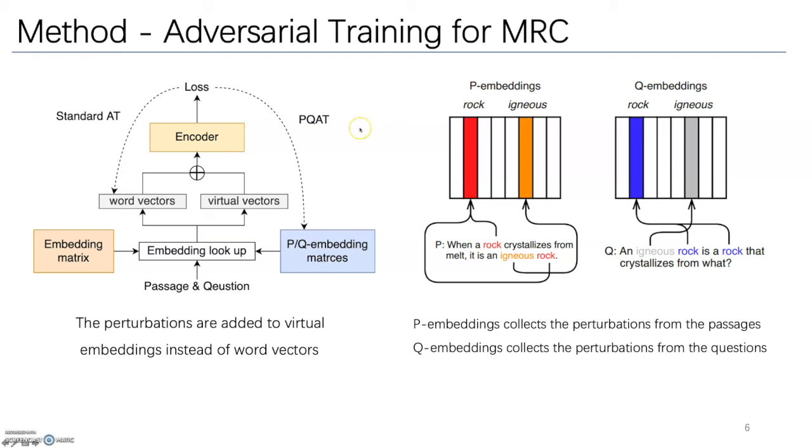While in PQAT, the perturbations are added to the virtual embedding matrices, different occurrences of the same word receive same perturbations from the P embeddings or Q embeddings.